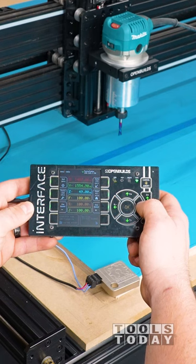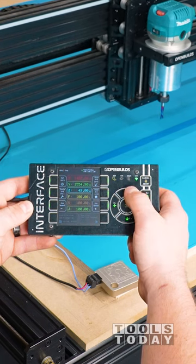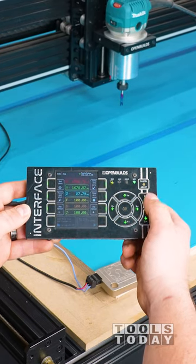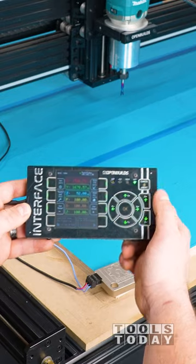Before starting any project on a CNC machine, we need to set our X, Y, and Z0 position. The X axis runs left to right, Y moves front to back, and Z moves up and down.